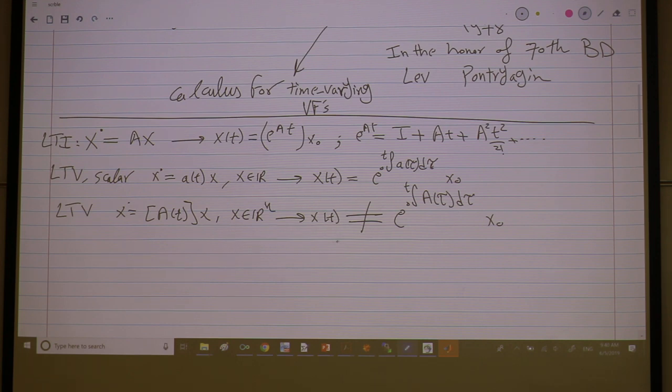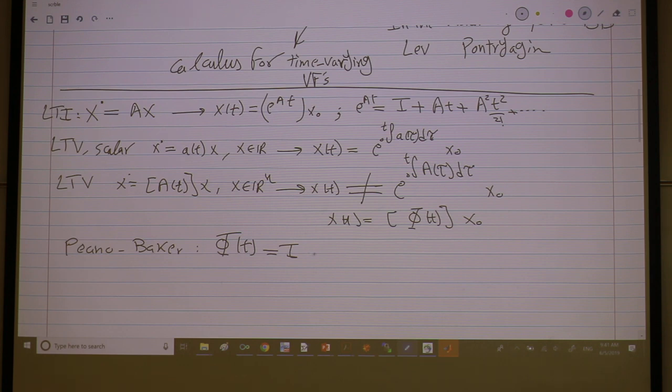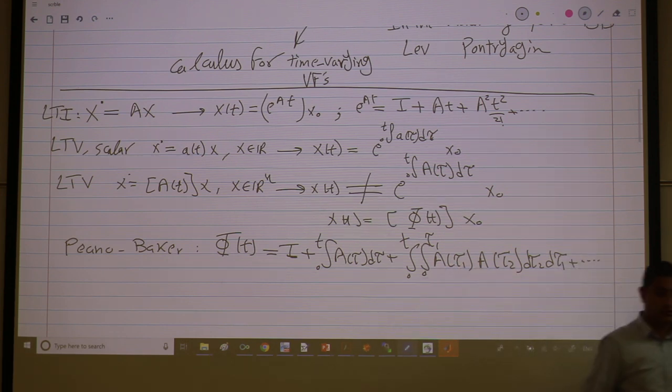But we know that x of t is, there is some matrix, it's linear of course, acting on x naught. It's linear, we know that, the state transition matrix. Luckily, due to the Peano-Baker series, provides actually a series solution for the phi. Now it's identity plus the integral of your matrix plus the double of the iterated integral, 0 to tau 1, A of tau 1, A of tau 2, right? D tau 2, D tau 1, and so on. So it's an infinite series that converges to your solution.